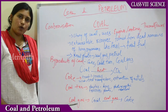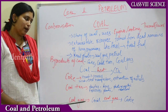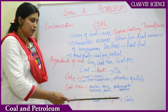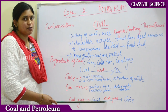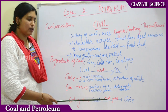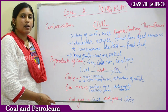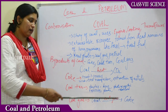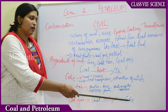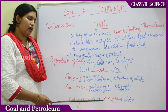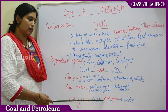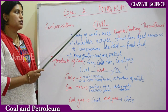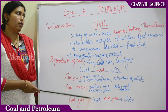The last byproduct of coal is coal gas. When coal is converted into coke in the presence of heat, some gas is evolved — that gas is called coal gas. It is used in many industrial processes. So we have now understood the story of coal, and now we shall move to the next topic: petroleum.